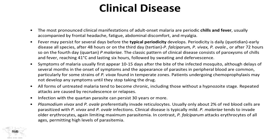Fever recurring after 48 hours — on the third day — is tertian, seen with falciparum, vivax, and ovale. Fever recurring after 72 hours — on the fourth day — is quartan, seen with Plasmodium malariae. The classic paroxysm consists of chills, fever reaching as high as 41°C lasting about six hours, followed by sweating and temperature normalization.